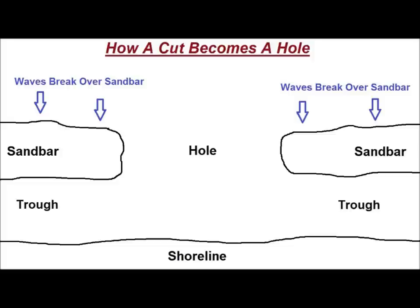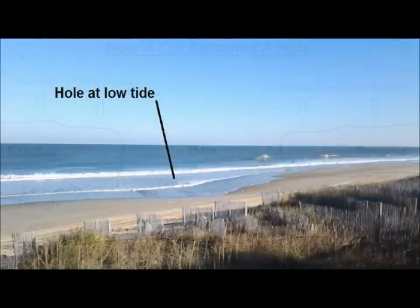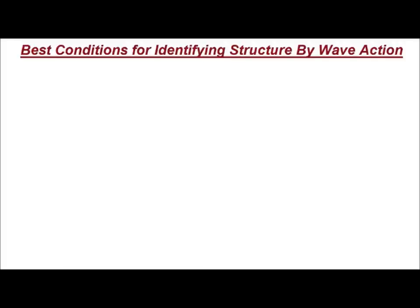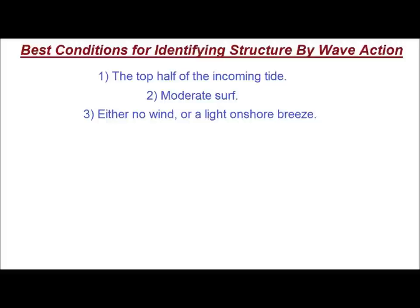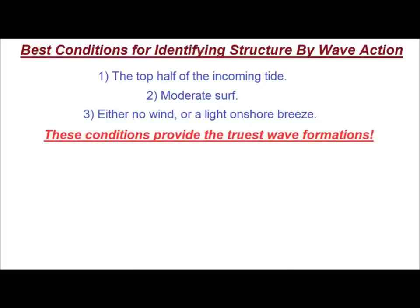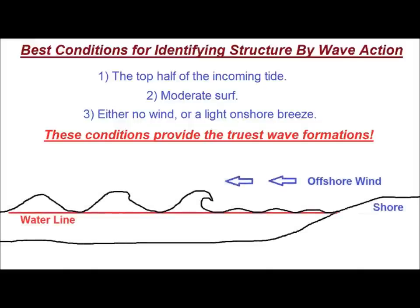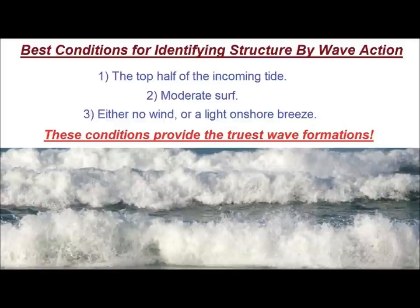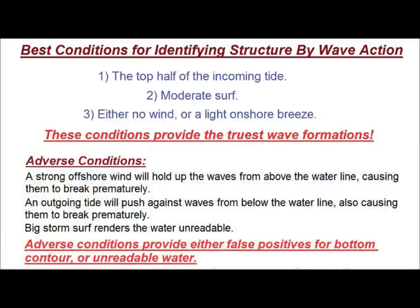As I've said before when referring to beach structure, sand doesn't disappear — it always goes somewhere. Holes and points may reveal themselves at low tide, but in most cases it's wave action that gives them away. Certain conditions make it easier to identify them, and some conditions make it almost impossible to identify them through wave action alone. The best conditions to identify holes and points, and pretty much any less obvious structure, are the top half of the incoming tide, moderate surf, and either no wind or a light onshore breeze. These conditions provide the truest wave formations. Conversely, a strong offshore wind will hold up the waves from above the water line, causing them to break prematurely. An outgoing tide will push against waves from below the water line, also causing them to break prematurely, not unlike a standing wave. And big storm surf is just a mess and renders the water unreadable. All of these adverse conditions provide either false positives for bottom contour or unreadable water, and this holds especially true for holes.